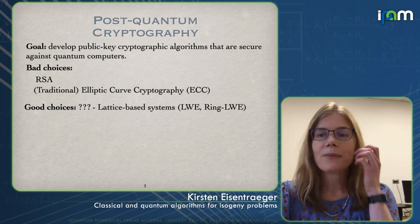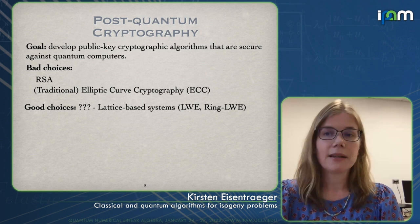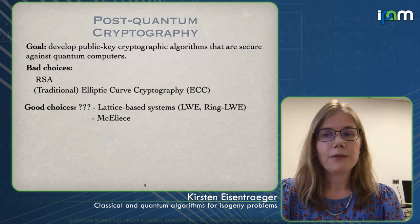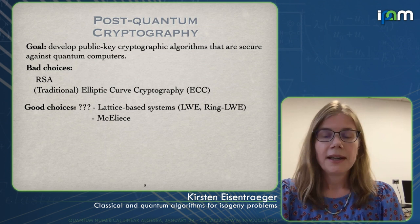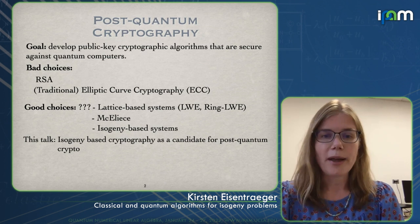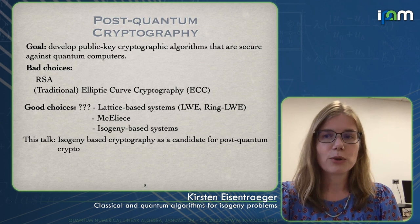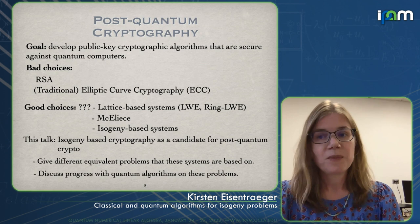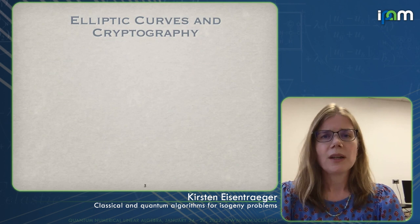Some proposals are lattice-based systems. The main ones are learning with errors (LWE) or a ring version of the same problem. There is also another type, like code-based systems — McEliece is an example of that. And then there are systems based on isogenies, and that is what I want to talk about today. I want to discuss whether isogeny-based crypto is a good candidate for post-quantum crypto, what the different equivalent problems are that these systems are based on, and what can be done with quantum or classical algorithms for these hardness assumptions.